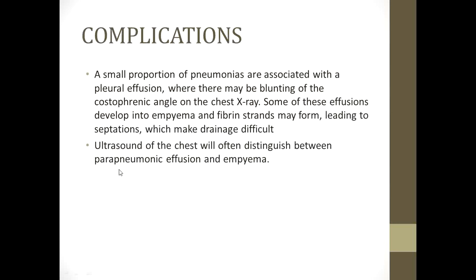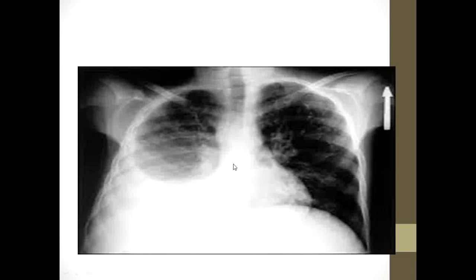Regarding complications: a small proportion of pneumonias are associated with pleural effusion, which may show as blunting of the costophrenic angle on chest X-ray — the angle between the ribs and the diaphragm. Some effusions develop into empyema, where the fluid becomes secondarily infected, forming pus with fibrin strands and septations that are difficult to drain. Chest ultrasound will often distinguish between parapneumonic effusion and empyema. This chest X-ray shows lobar pneumonia with an obliterated costophrenic and cardiophrenic angle, indicating effusion.